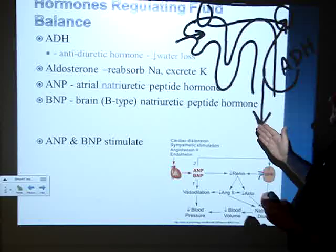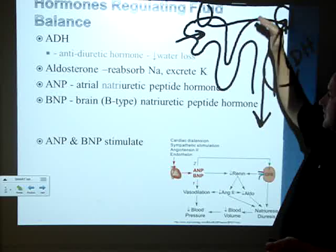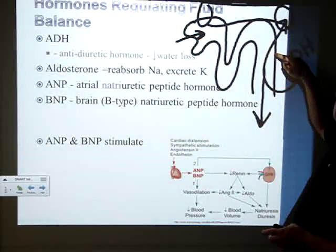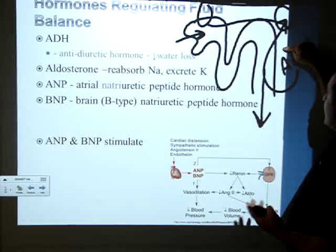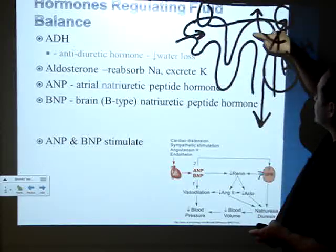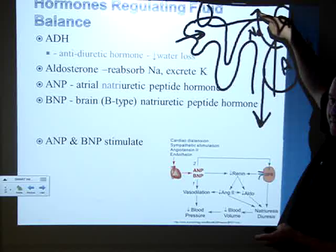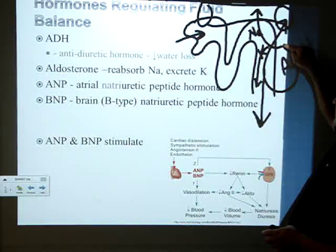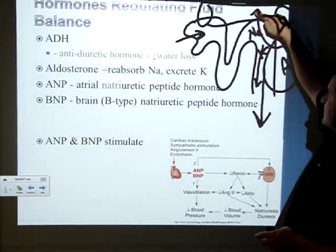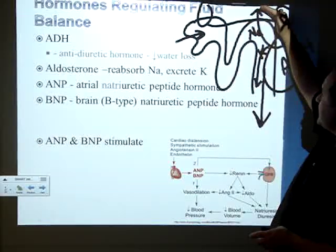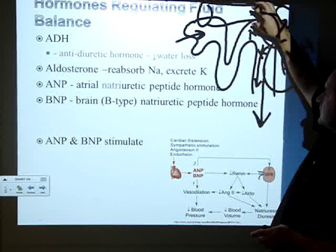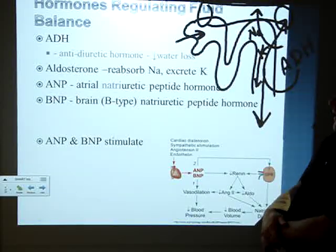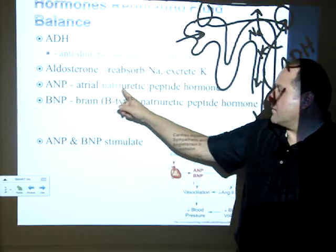So ADH decreases your water loss and puts it back in your blood. Aldosterone does something similar — it takes sodium from the distal convoluted tubule and collecting duct and throws it back into your bloodstream, while getting rid of potassium in the process. Because aldosterone puts sodium back in your blood, water chases it — the net effect is the same as ADH: water ends up back in your bloodstream.